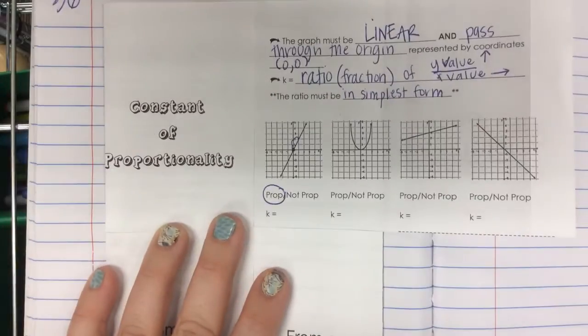Let's try the next one. Is that shape proportional? No. Why not? It's not straight. It's not linear, but does it go through the origin? Yeah. So it meets one of the criteria. It does go through the origin, but it's not a line. It's not linear. So it's not proportional. Is there a constant of proportionality? Nope.